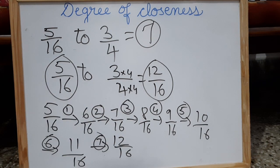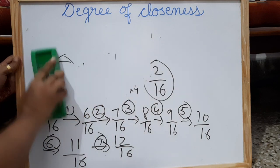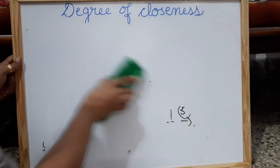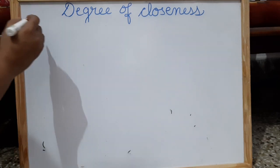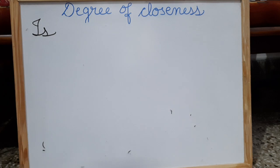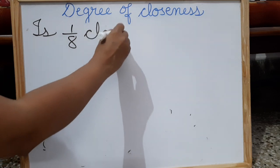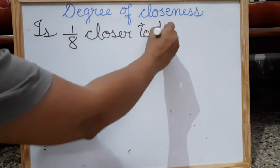Let us take one more example, children. We will find out: is the given number closer to one fractional number or another? So the question is: is 1 by 8 closer to 1 by 2 or 1 by 4?